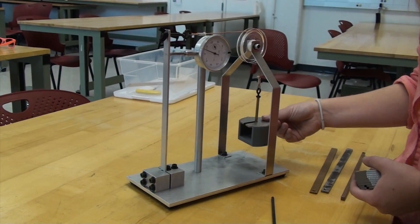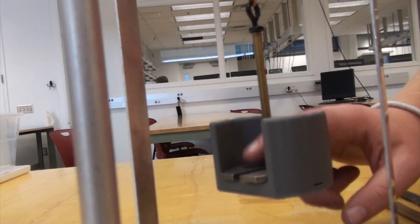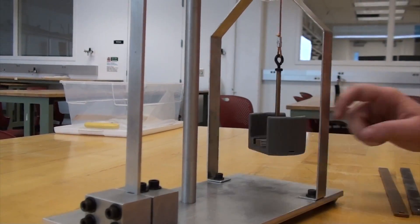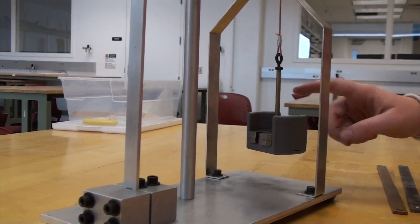Start by adding one weight to the weight holder. Be sure to tap the weight to remove any hysteresis error within your measurements. Keep adding weights one at a time until all weights have been used.